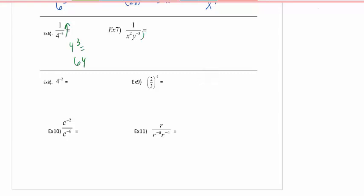On number 7, the negative is connected just to the y. So I'm going to move the y cubed up, but the x squared stays. If it's a positive exponent, it stays. If it's just a number, it stays. Negative exponents change location.